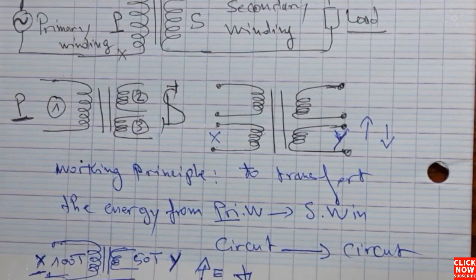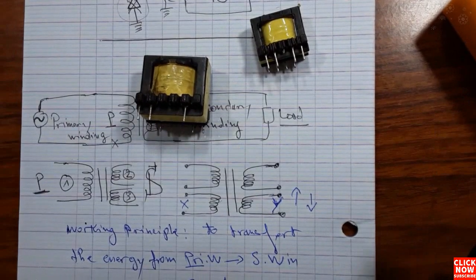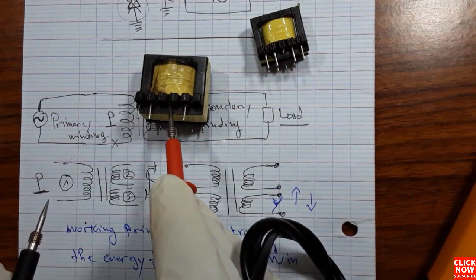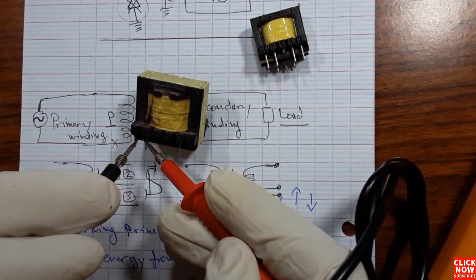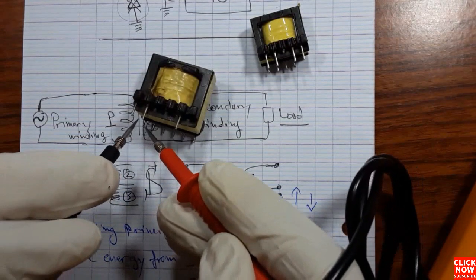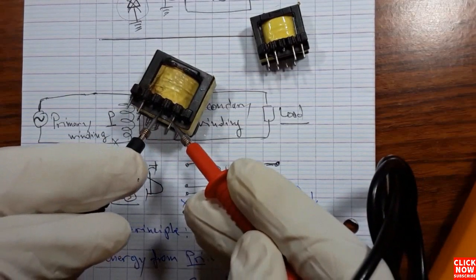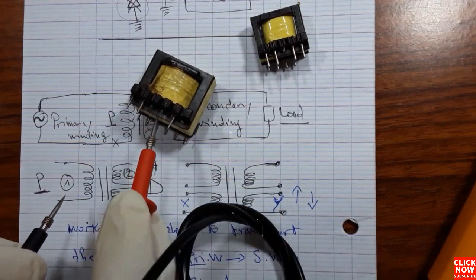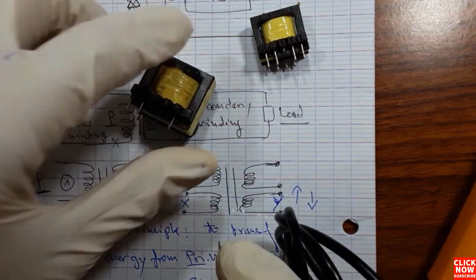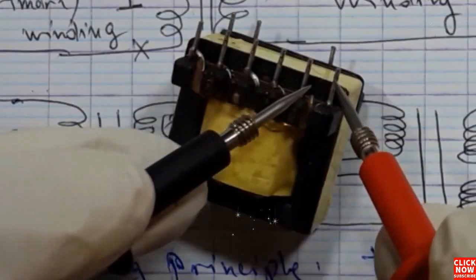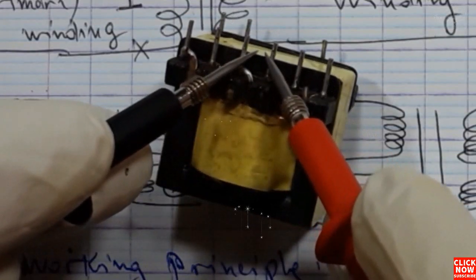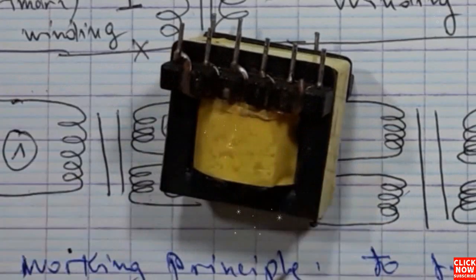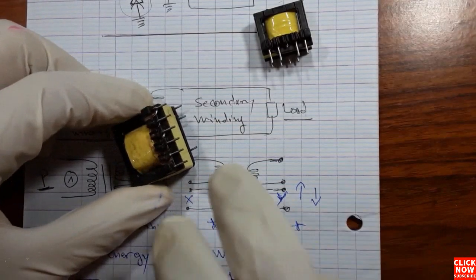Here we have another transformer to check using the multimeter. This transformer has four terminals — a cathode terminal, and we can identify the first inductor and the second inductor. It is a serviceable transformer. In the output we have three inductors — the first, the second, and the third — and all inductors are good, so the transformer is good.